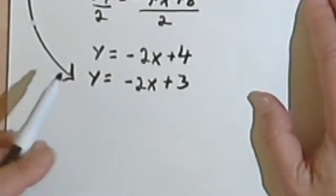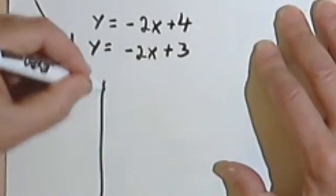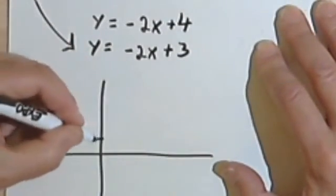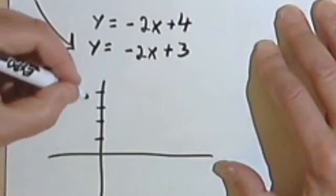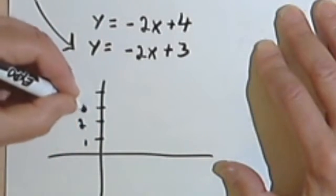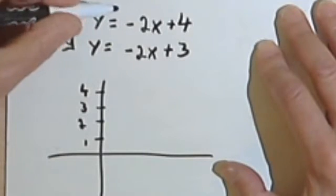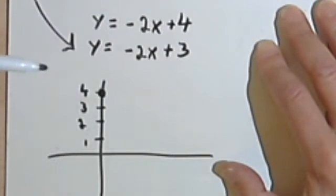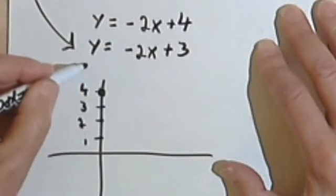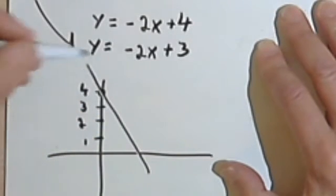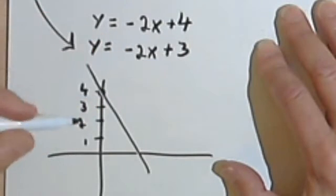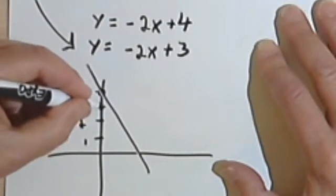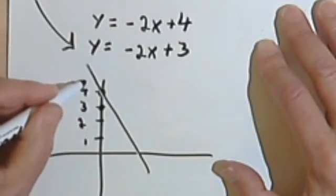So let's see what happens when we do graph it. So here's a rough graph. Well, the first equation, we've got that y-intercept at 4, so I'm going to start up at the 4, and I'm going to have a slope of negative 2. The second equation, I'm starting at the y-intercept, which is 3, and I'll also have a slope of negative 2.